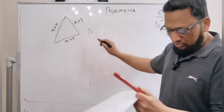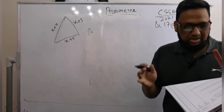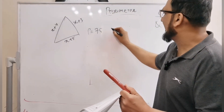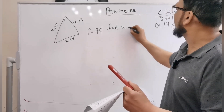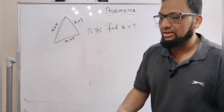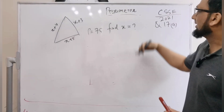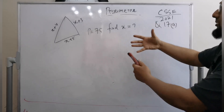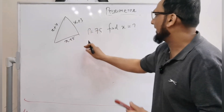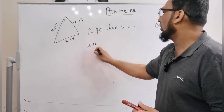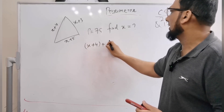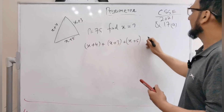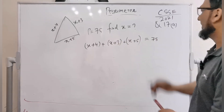The perimeter value is already given. We need to find the value of x. Using the same method as before, we add all three sides of the triangle: (x plus 4) plus (x plus 3) plus (x plus 5), and this equals 75.